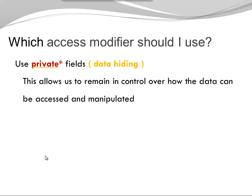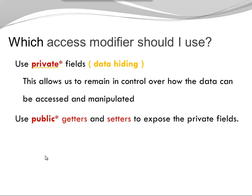A short consideration of which access modifier should be used: if you declare fields, use private. This allows us to remain in control over how the data can be accessed and manipulated. Then use public getters and setters to expose the private fields. I want to point out this is an oversimplification, but it is a good starting point to keep your fields private and your getters and setters public.